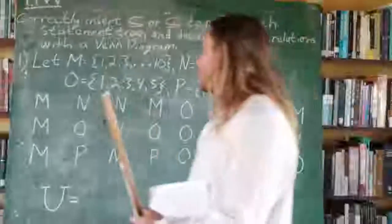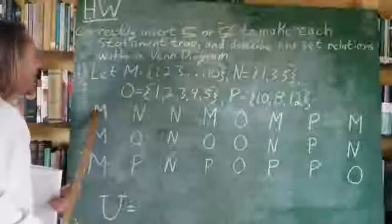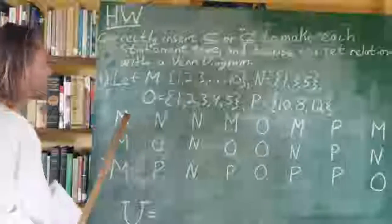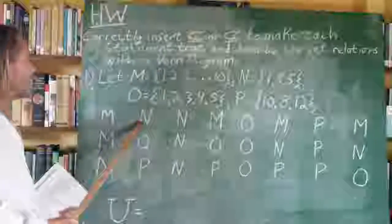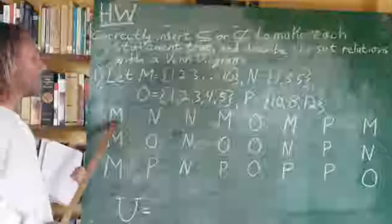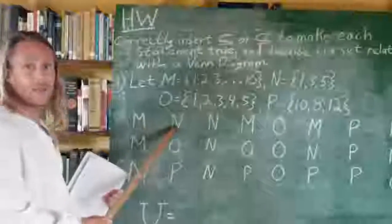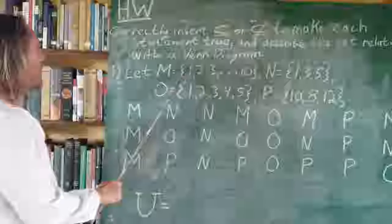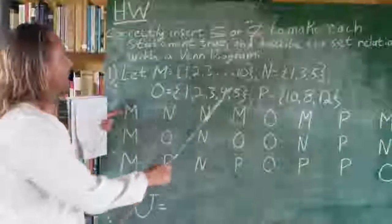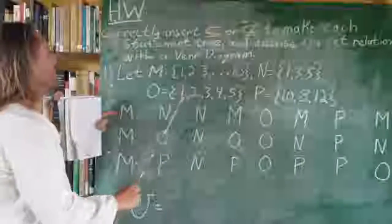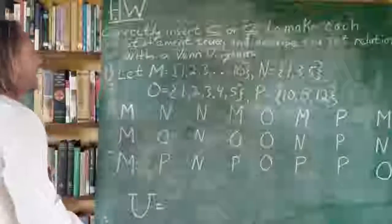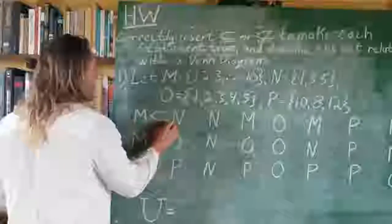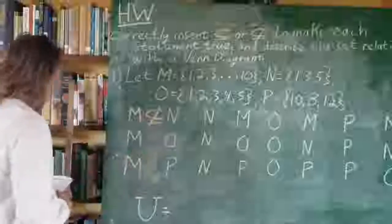Let's take a look at our relations. Is M a subset of N? In order for M to be a subset of N, all the elements in M have to be distinct elements within N. M has 1 — check. Does N have a 2? No. So M is not a subset of N.